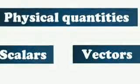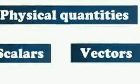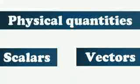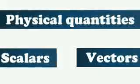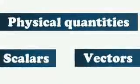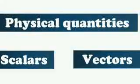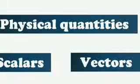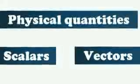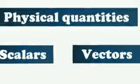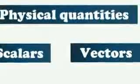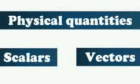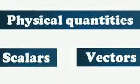Physical quantities are generally divided into two: scalars and vectors. Coming to scalar — physical quantities which can be completely described by magnitude alone are called scalars. What do you mean by magnitude? Magnitude means numerical value. Suppose your height is 160 centimeters — this 160 is the magnitude. If you are weighing 50 kg, 50 is the magnitude.